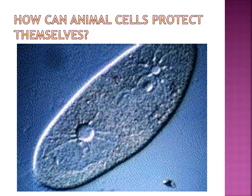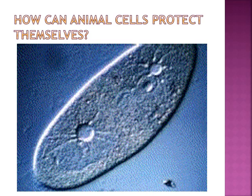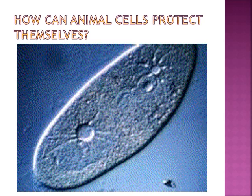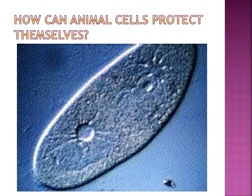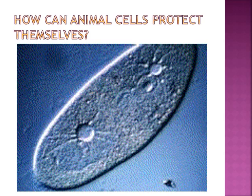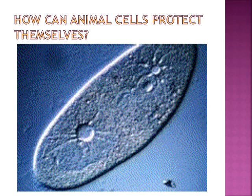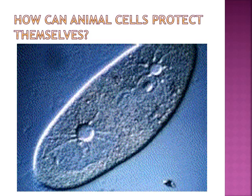Animal cells need to protect themselves from osmotic lysing. One way they do that is with a contractile vacuole — important not just for storage but for maintaining cell volume. Water floods in and the cell expands; then the cell uses energy to squeeze it shut and push the water out.